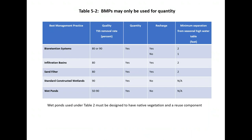Table 5-2 large-scale green infrastructure BMPs — usable only for quantity control — include bioretention systems, infiltration systems, and sand filters that exceed the drainage area limitations (making them large-scale), as well as standard constructed wetlands and wet ponds. Wet ponds must have a native vegetative buffer and a reuse component to qualify as green infrastructure; without those elements they do not meet the definition.